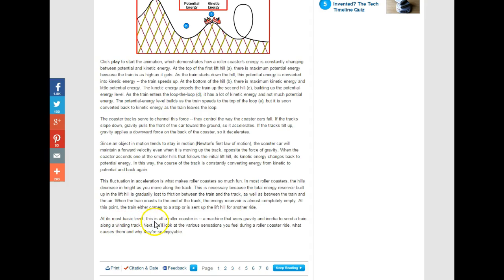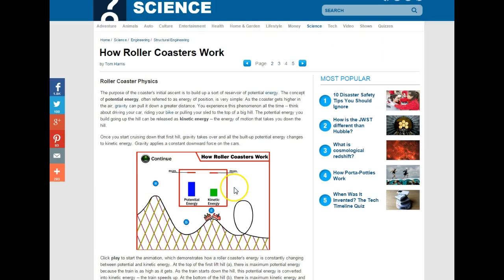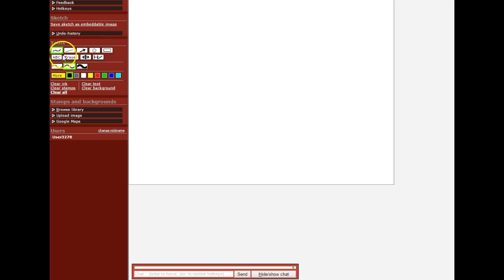At the most basic level, a roller coaster is a machine that uses gravity and inertia to send a train along a winding track with various sensations that you feel. You're welcome to go to this website and find out more about roller coasters. We're going to talk about the mathematics.